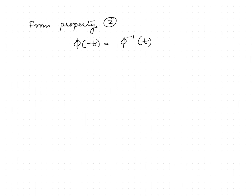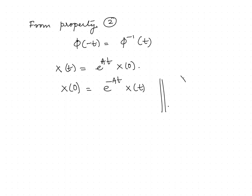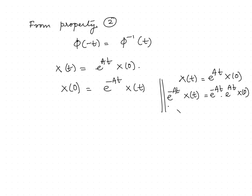This can also be used for finding the initial value of the state from any time t. Once we know the states at any time t we can find the initial value. That is, x(t) = e^(At) x(0), so I can write x(0) = e^(-At) x(t). If we have x(t) = e^(At) x(0), I can pre-multiply this equation by e^(-At), resulting in x(0) = e^(-At) x(t).